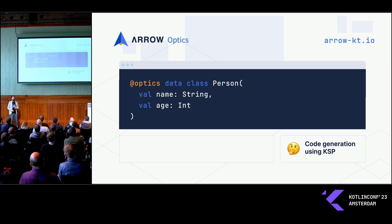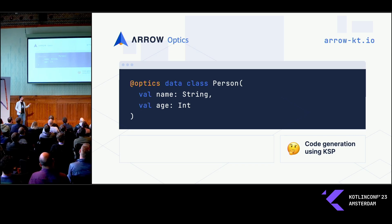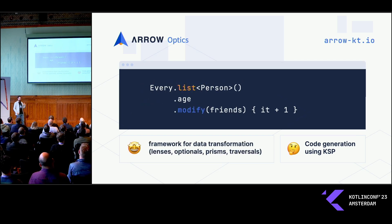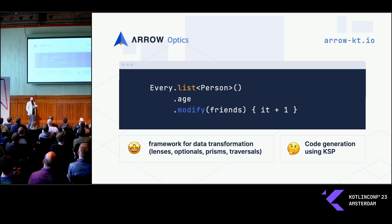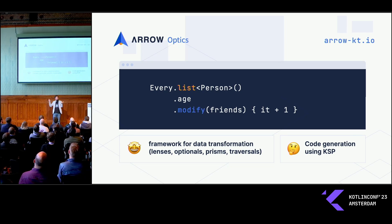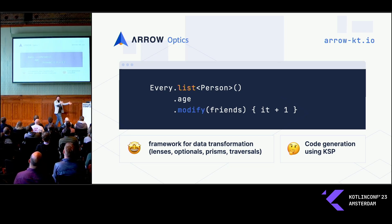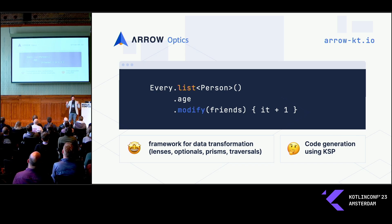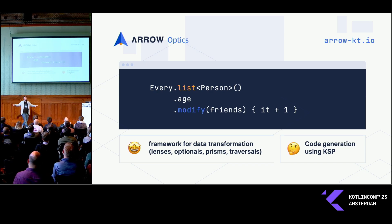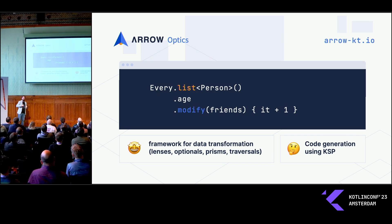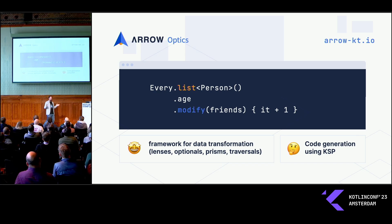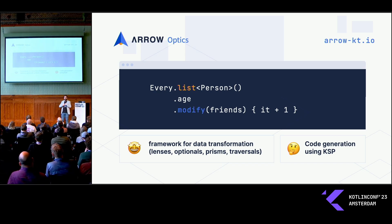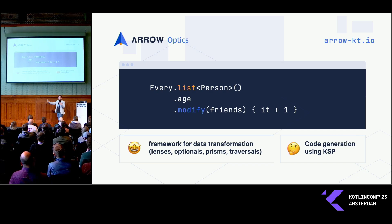What is really nice about arrow optics is that it's not only for fields — this is a whole framework for data transformation. The same idea of copying is essentially the same idea as we have for a map. A map is nothing else than copying a list, performing some modification over each element. Arrow optics takes this idea and applies the idea of mutable references in a uniform way.